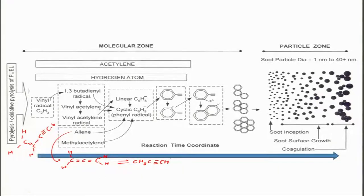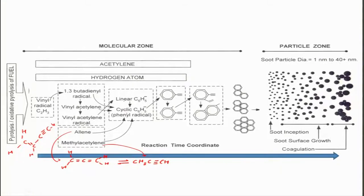Once methyl acetylene is formed it will be cyclized. After cyclization it can get into vinyl acetylene C₆H₅, or it can go to cyclic C₆H₅ — the phenyl group. Allene can also get into this route, or methyl acetylene can convert to C₆H₅ via another route. Once formed, the phenyl group will be produced.